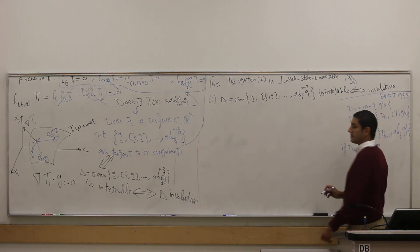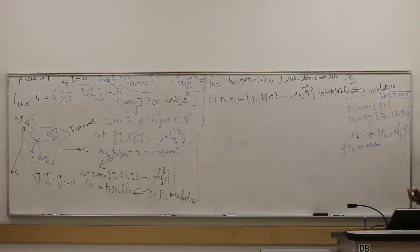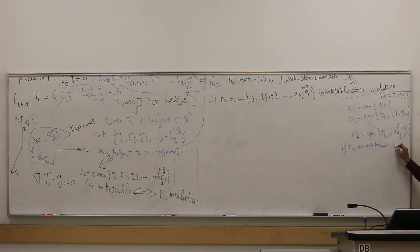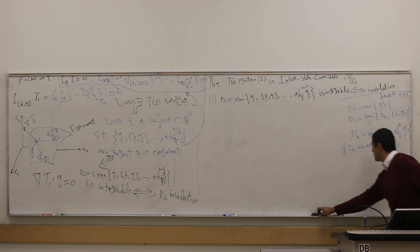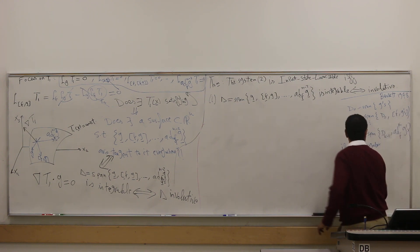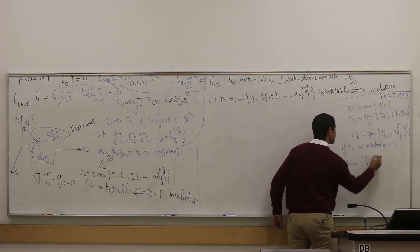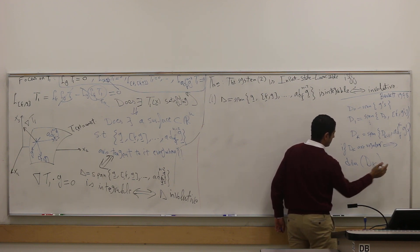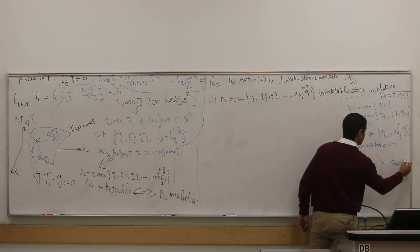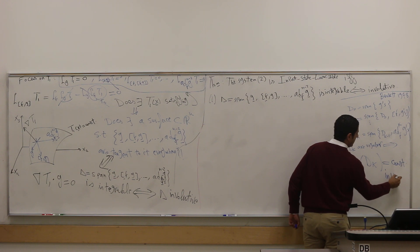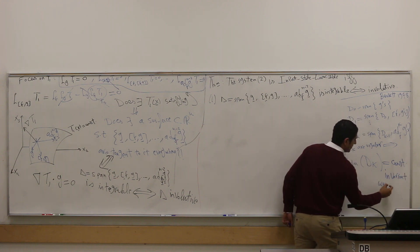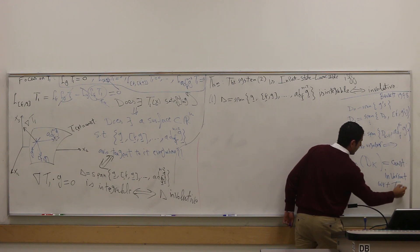So they are constant rank in a neighborhood of the point, and if they are analytic and the dk are regular, then they are invariant under transformation and feedback. The dimension of each dk is constant and is invariant under feedback with respect to transformations.